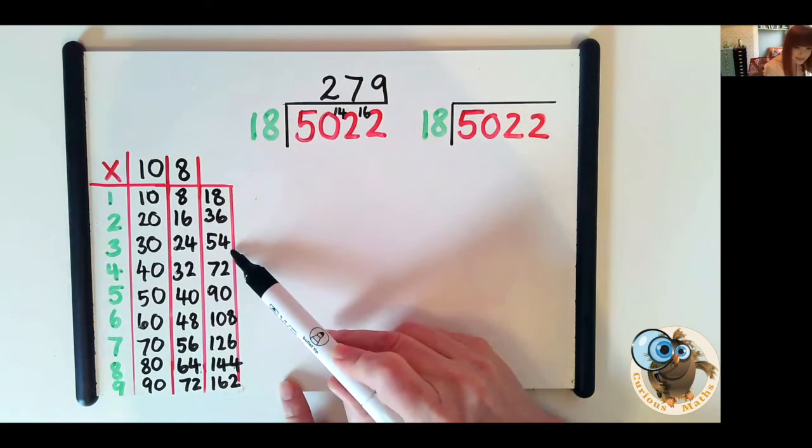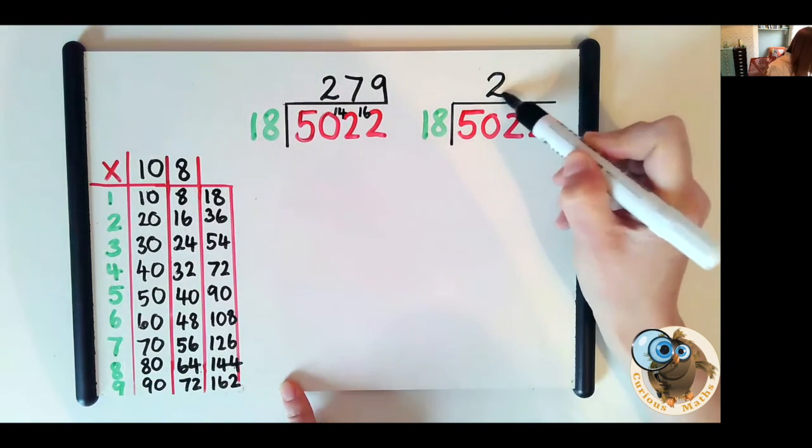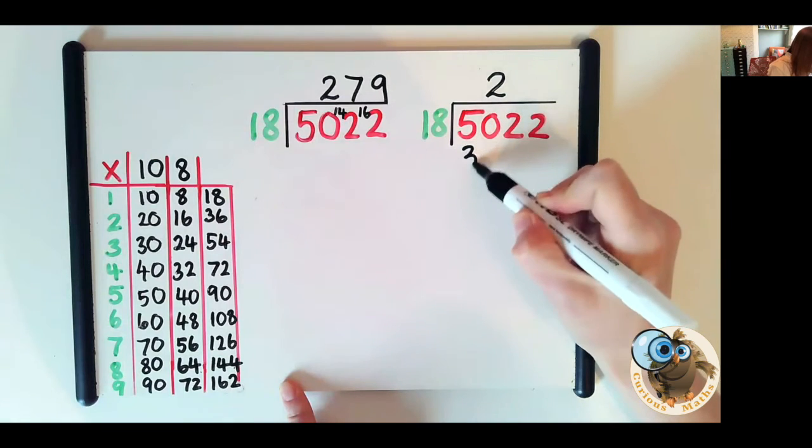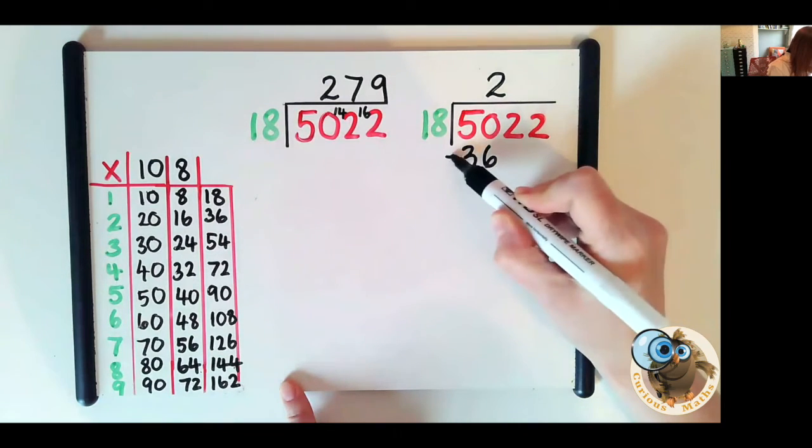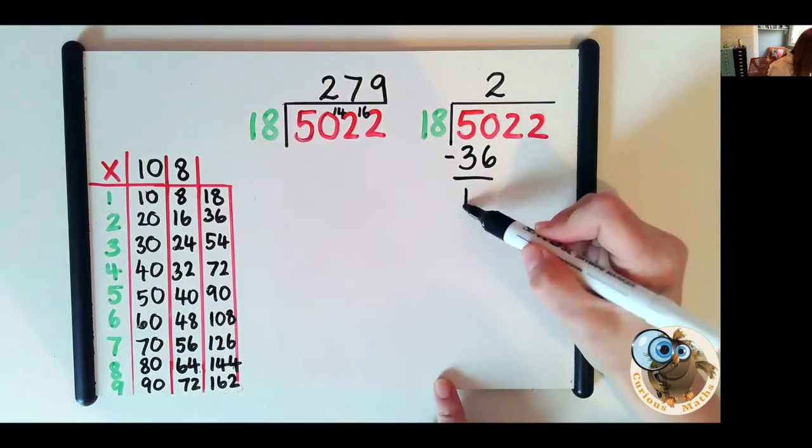So how many 18s in 50? I can see three 18s are 54 so that's too many so it must be two. Two 18s are 36 and we write that 36 underneath and we take it away from the 50 and that will give us 14.